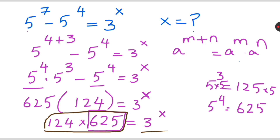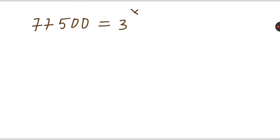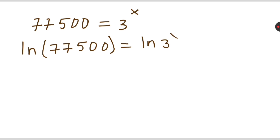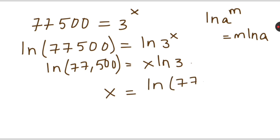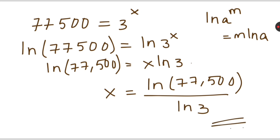So 77500 equals 3 raised to 4 of x. Since x is in the exponent, we take the natural log on both sides to simplify. ln(77500) equals ln of 3 raised to 4 of x. The right hand side is in the form ln(a raised to m), which equals m times ln(a). So we get ln(77500) equals x times ln(3), and therefore x equals ln(77500) divided by ln(3).